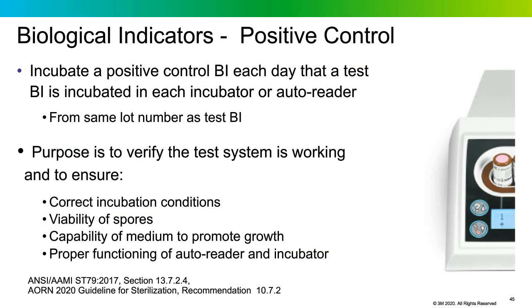With any BI test system, it's necessary to run a positive control biological indicator to make sure the system is working. The positive control BI is taken directly from the box — not sterilized — to confirm spores are still viable. The positive BI should be from the same lot as the test BI; Joint Commission surveyors love to check this. ST-79 asks us to run a control BI each day and in each auto-reader or incubator to verify incubation conditions, organism viability, media function, and incubator temperature.